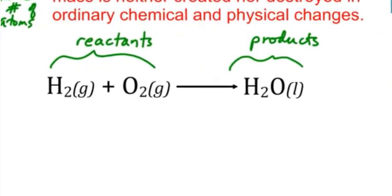We're going to do what's called balancing an equation. The first thing I want you to do is draw a perpendicular line right where you see the arrow. You know that the arrow means yields or produces. So put your line down. Then I want you to start listing what elements are given. Right now you have H's and O's given on both sides. I'm only going to write H and O once, but I'm going to write the total numbers of those H's and O's on both sides of the line.